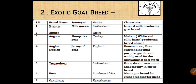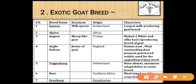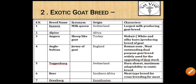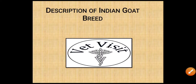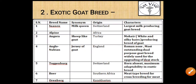Toggenberg characters: horns are absent, and it has maximum adaptability among exotic breeds. Boer — its origin is Southern Africa; it is a meat type breed used for cross-breeding for meat. Orenburg — its origin is from Kazakhstan.